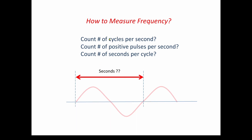So how are we going to measure it? With 60 cycles per second, we could somehow count how many cycles per second are happening with our waveform. You could count the number of positive pulses per second — a positive pulse happens once every cycle. So you see a positive pulse, that's one; another positive pulse, that's two. The problem is, say you've got 60.3 cycles per second — 60.3 hertz — you're going to have a fraction of a complete cycle. You're going to have three-tenths of a cycle. How are you going to measure that if you're just looking at the positive pulses? It gets kind of complicated.